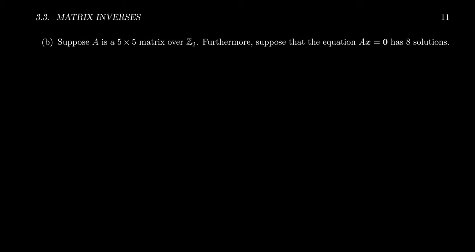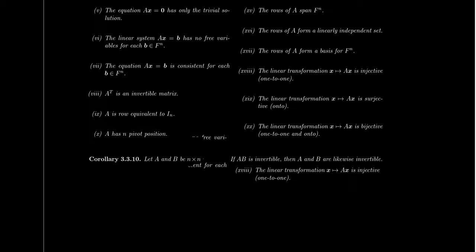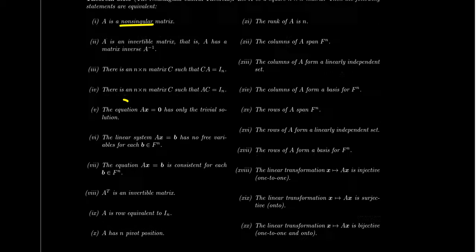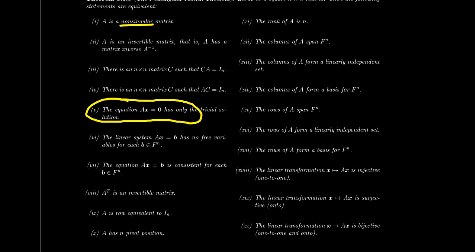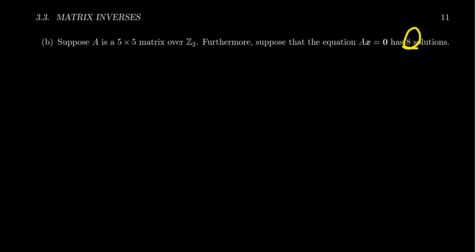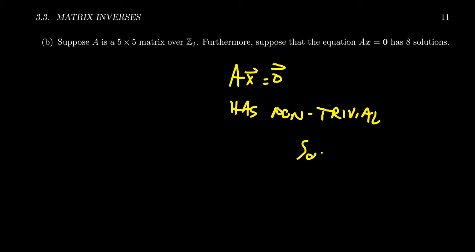Suppose A is a five-by-five matrix over the field Z2, and the equation Ax equals 0 has eight solutions — which suggests the null space of A is a three-dimensional subspace of Z2^5. What does this say about singular versus non-singular? We chatted previously that if the homogeneous system has only the trivial solution, the matrix is non-singular. But here there are eight solutions, so there are seven non-trivial solutions. That tells us Ax equals 0 has non-trivial solutions, which implies this matrix is not non-singular — so it's singular, by the non-singular matrix theorem.